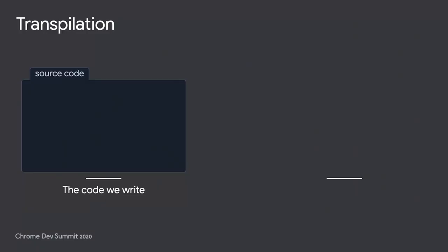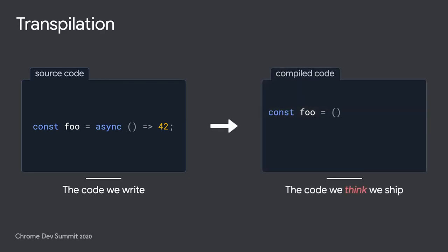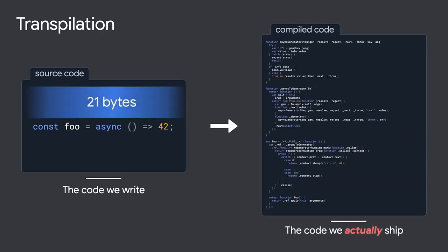Most of us aren't writing code that gets delivered totally unmodified to run in browsers — we rely pretty heavily on transpilation. Say I wanted a function that returns promises resolving to the number 42. I might write a little async arrow function like this one. In order to have that code run in the last 5% of browsers, I might transpile it. In reality, most current tools are going to take my 21 bytes of source code and transpile it to something like 583 bytes, plus a runtime library that brings us up another six and a half kilobytes to 7,000 bytes.